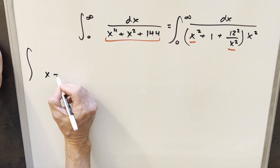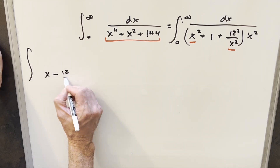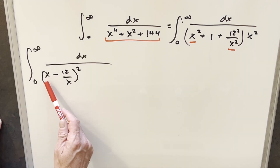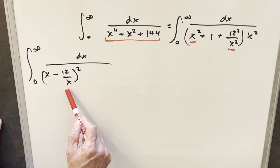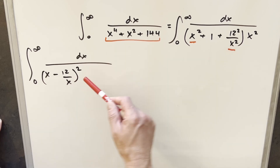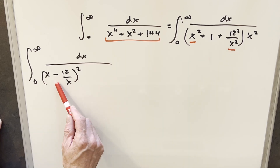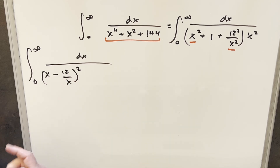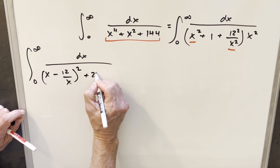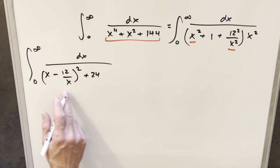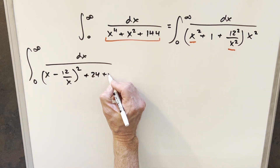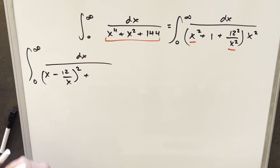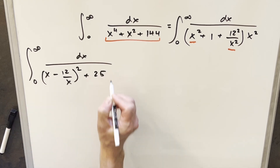I'm going to put a minus sign and write it as x minus 12 over x, squared. When you square this out, you get x squared back, plus 12 squared over x squared, and then a third term of minus 24. I don't want to change it, so I'll add 24 to offset that minus 24. We also have the plus 1, so I can combine those to write 25. That's going to be nice later on.